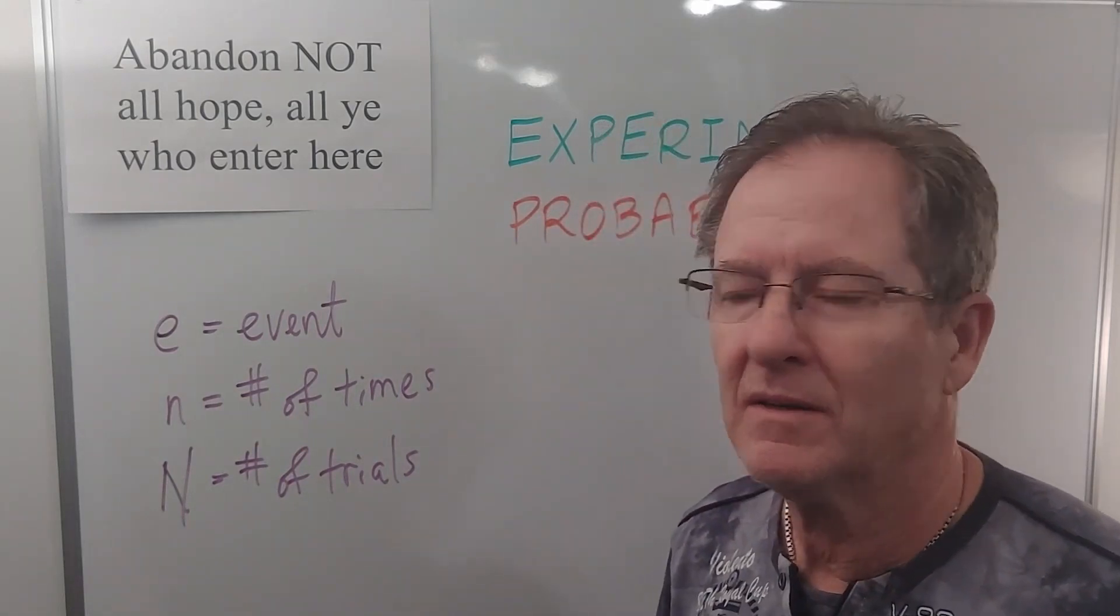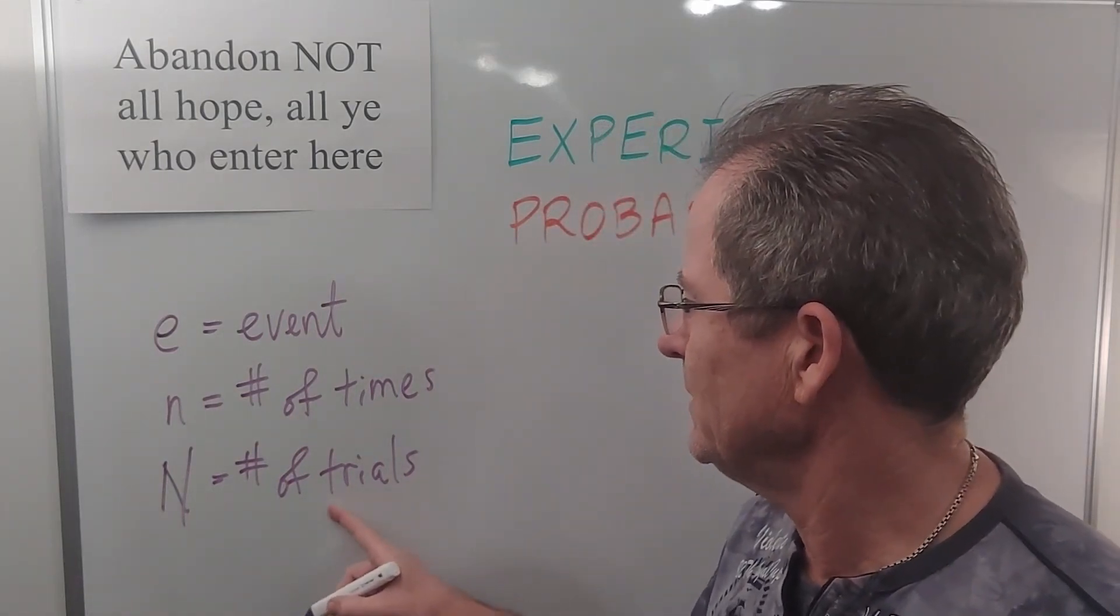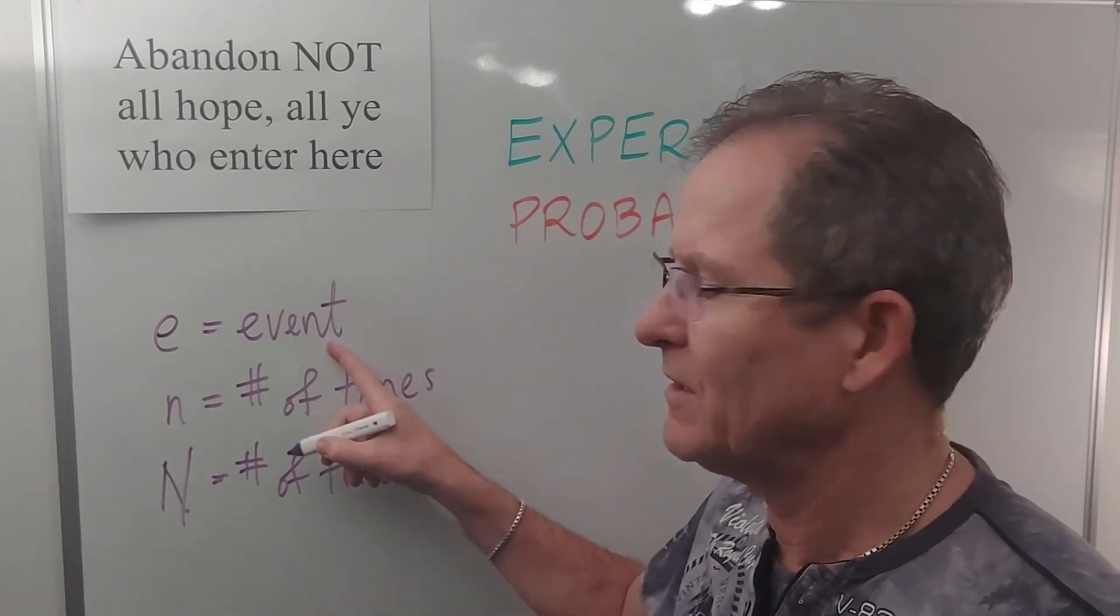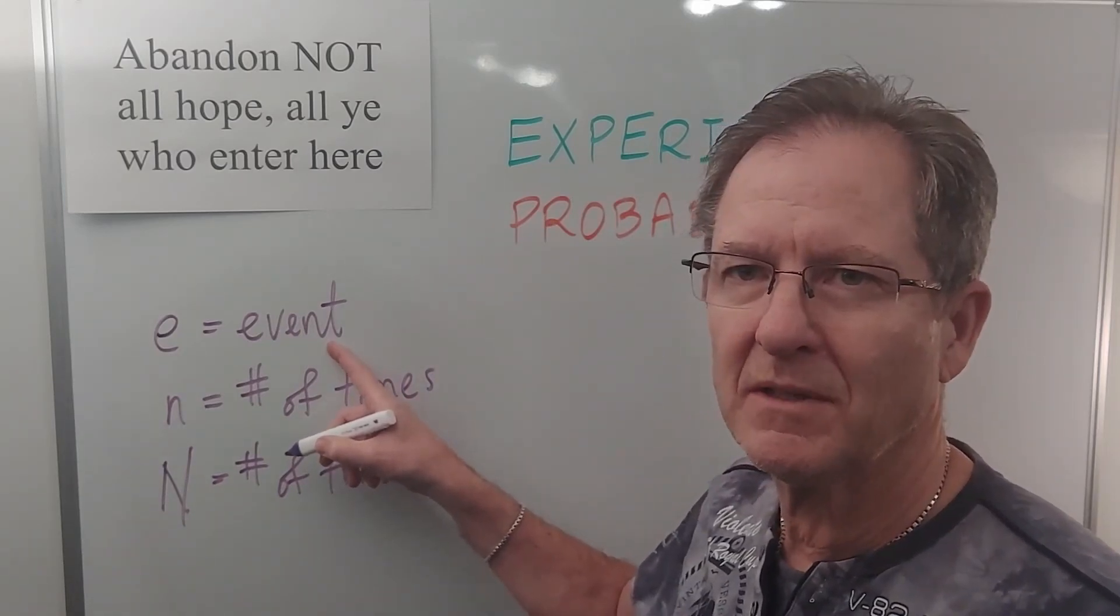So you could be flipping a coin 50 times and you get heads 20 times. So what's the probability of that event, namely getting heads? Well it would be 20 out of 50.